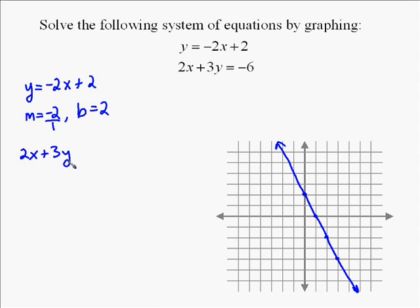For the second one, it's not solved for y. So I'm going to use what's called the intercept method of graphing. I'm going to first find the x-intercept, which we find by plugging in 0 for y. And then I'll also find the y-intercept, and those will be the two points I draw my line through.